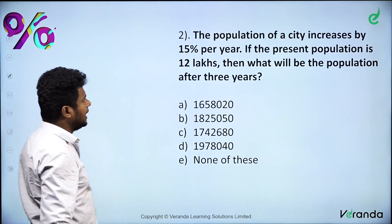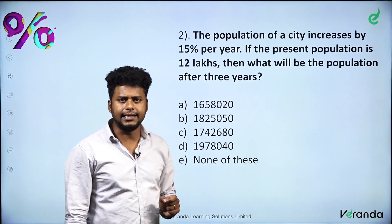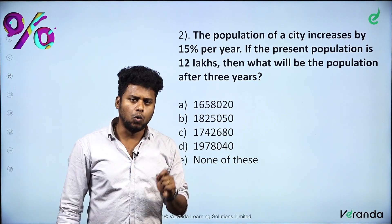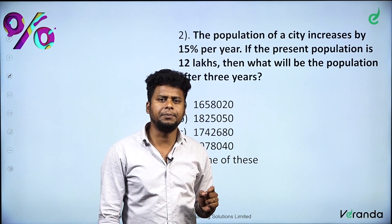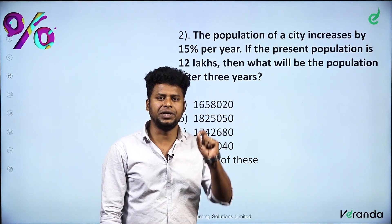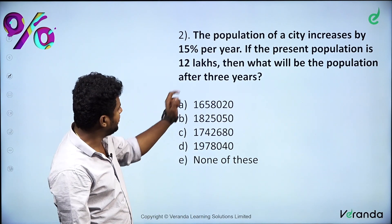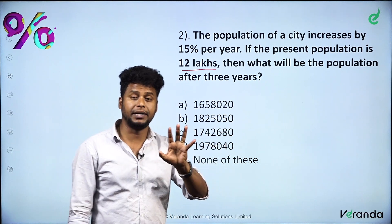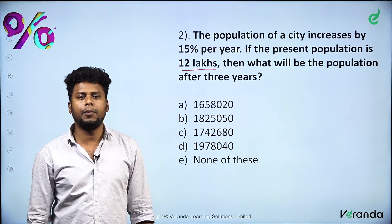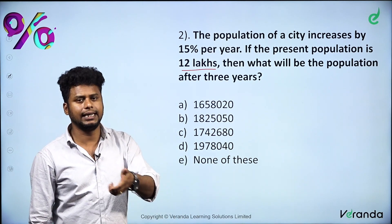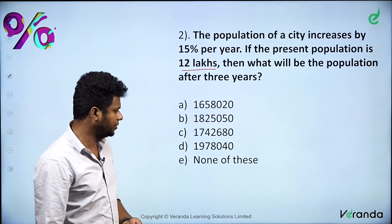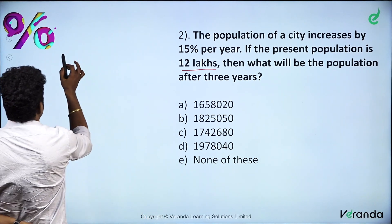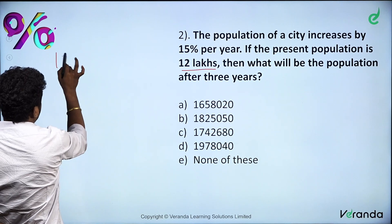Next sum. The population of a city increases by 15% per year every year. If the present population is 12 lakhs, then what will be the population after 3 years? If we go with the conventional method or the logical method, it takes a lot of time.